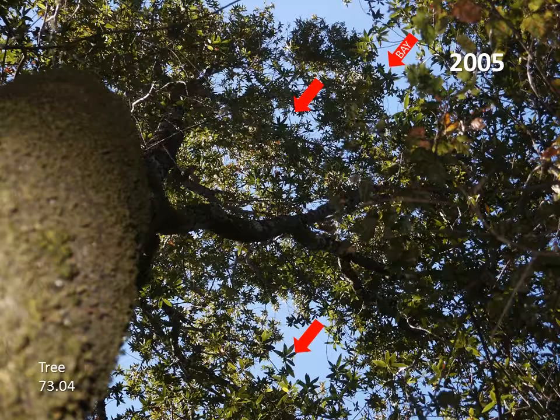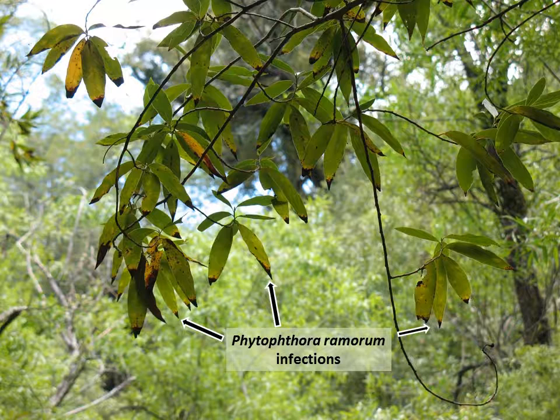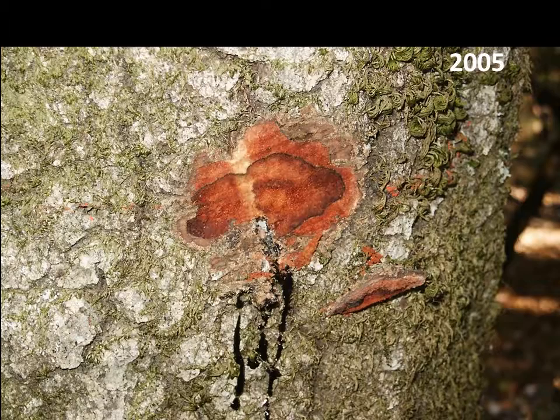Some trees show more highly resistant responses. Notice that this example tree is growing near a California bay. Phytophthora ramorum leaf infections on California bay are the source of the spores which infect oaks. We evaluated this tree every year beginning in 2000.